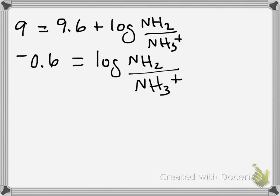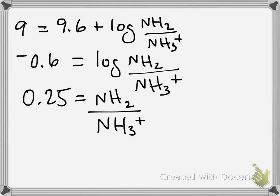You take the anti-log of negative 0.6, and you get 0.25 for the ratio of the deprotonated to the protonated version of glycine at the amino group. Another way you can say this is 1 over 4.